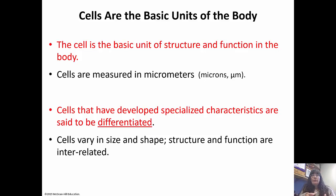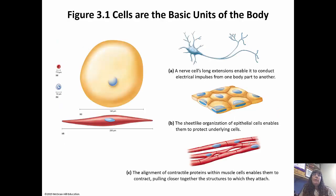Cells are actually measured in micrometers, and they range from extremely tiny to visible with the naked eye. They have to develop and differentiate, because each cell is going to have its own unique function. They develop specialized characteristics and become what we call a mature or differentiated cell. They vary in size and shape, and as we learned in chapter 1, structure and function go hand in hand.